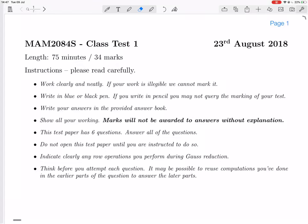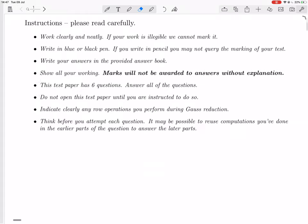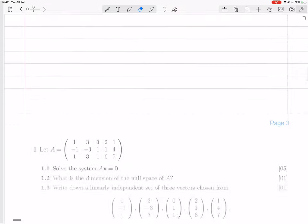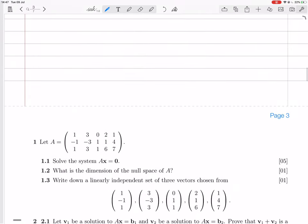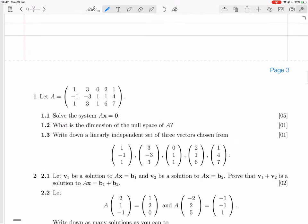Okay, so we are looking at class test 1 from 2018, and we're going to do question 1. So we have this matrix A, 3 by 5. Solve the system Ax = 0. So that's going to involve Gauss reduction. We're going to put down Ax = 0, we're going to Gauss reduce.